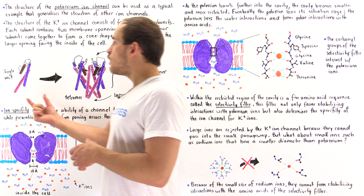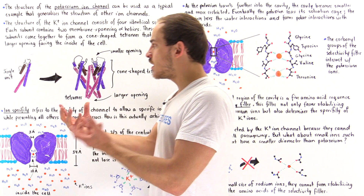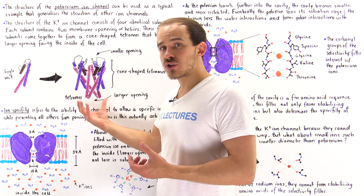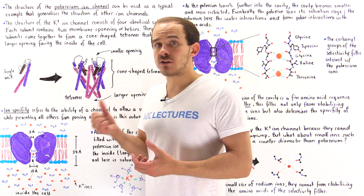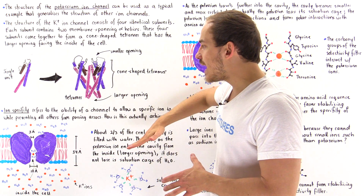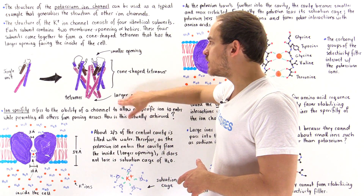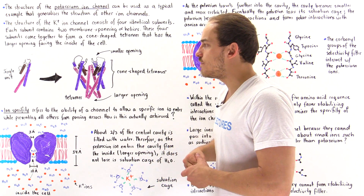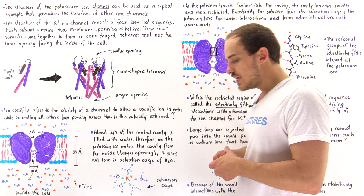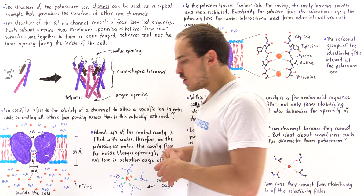Four of these identical polypeptide chains come together to form a tetramer structure that looks like a cone, because on one side of that cone we have a larger opening than on the opposing side of that protein. We'll see why that's important in just a moment.